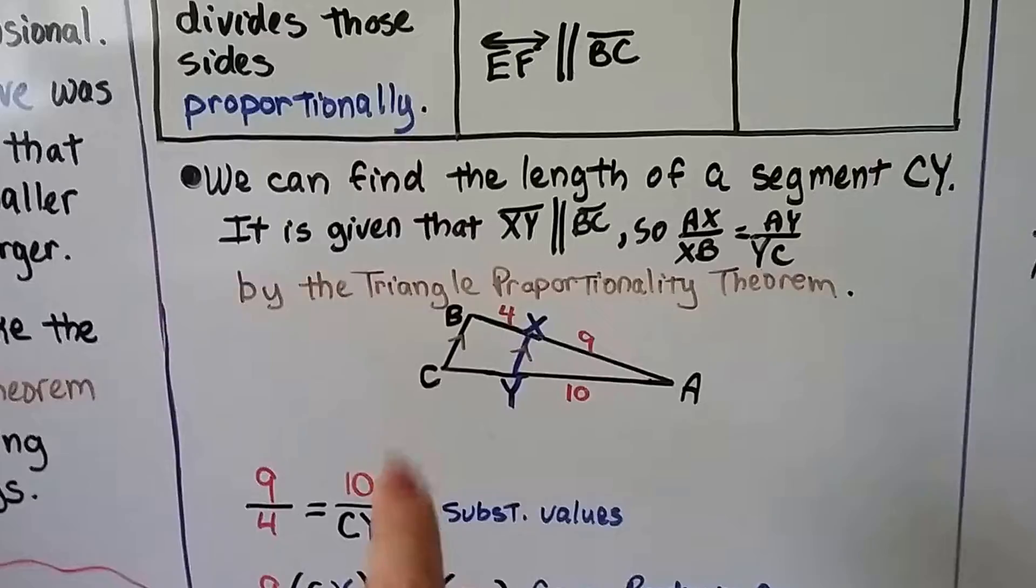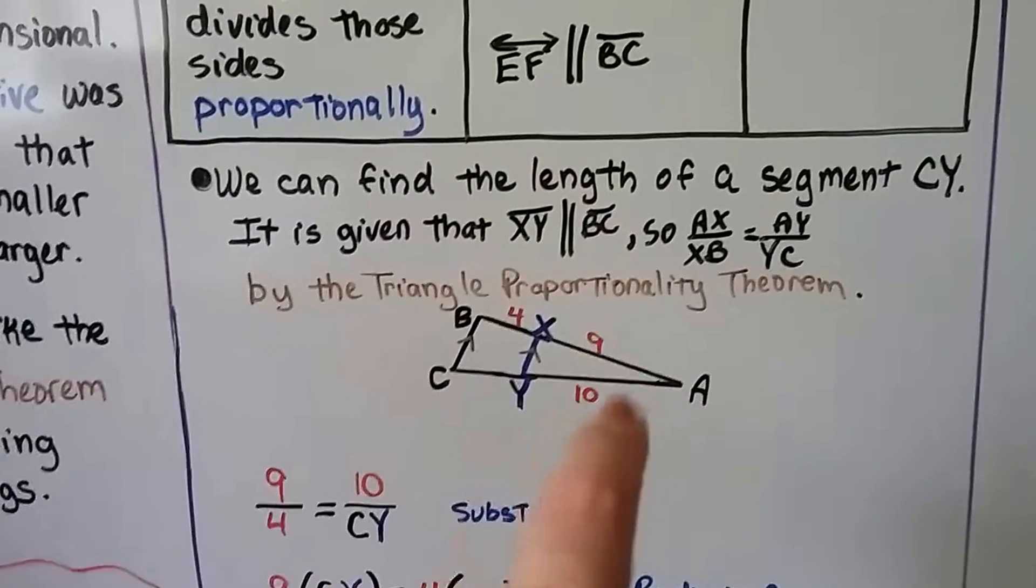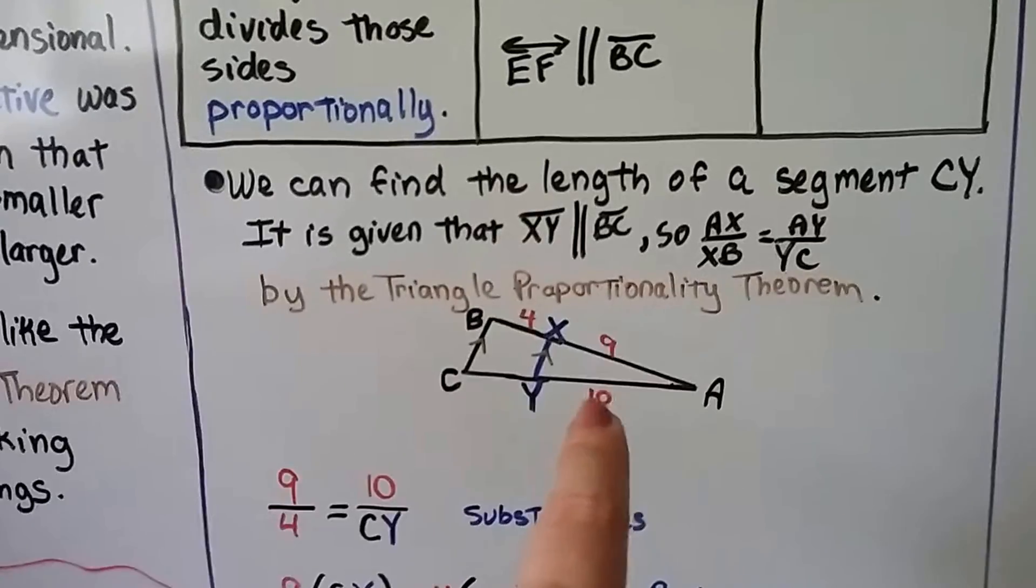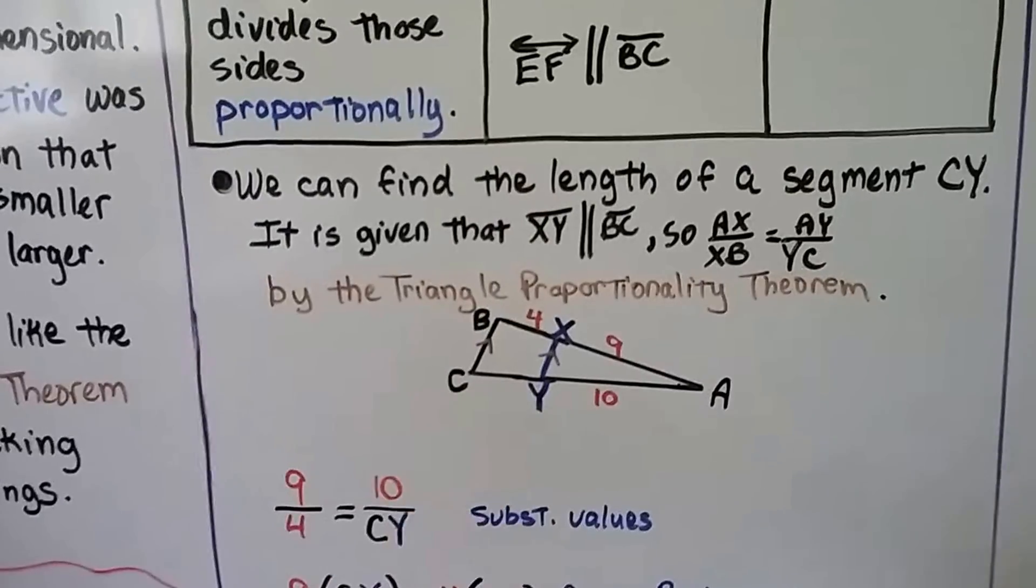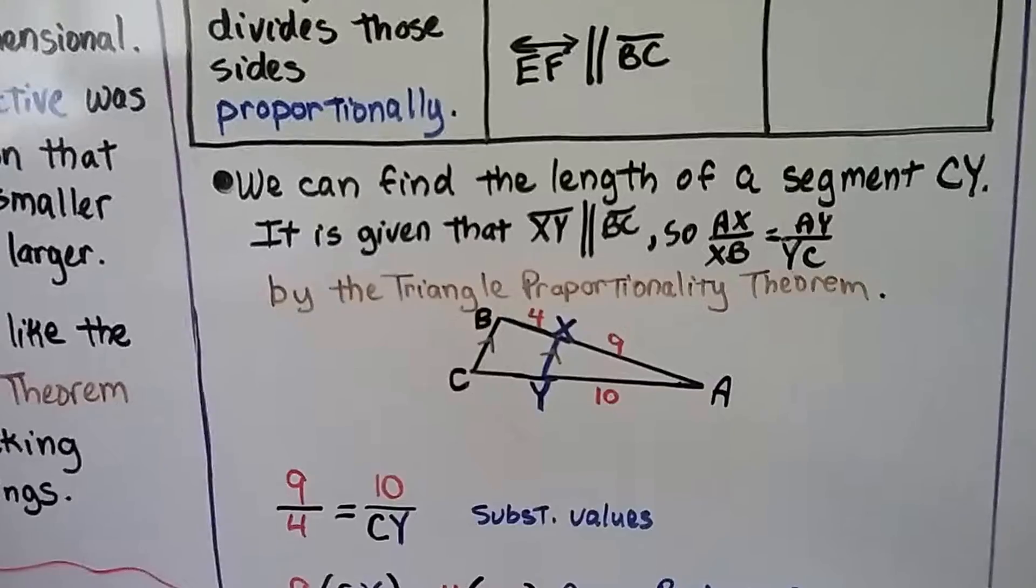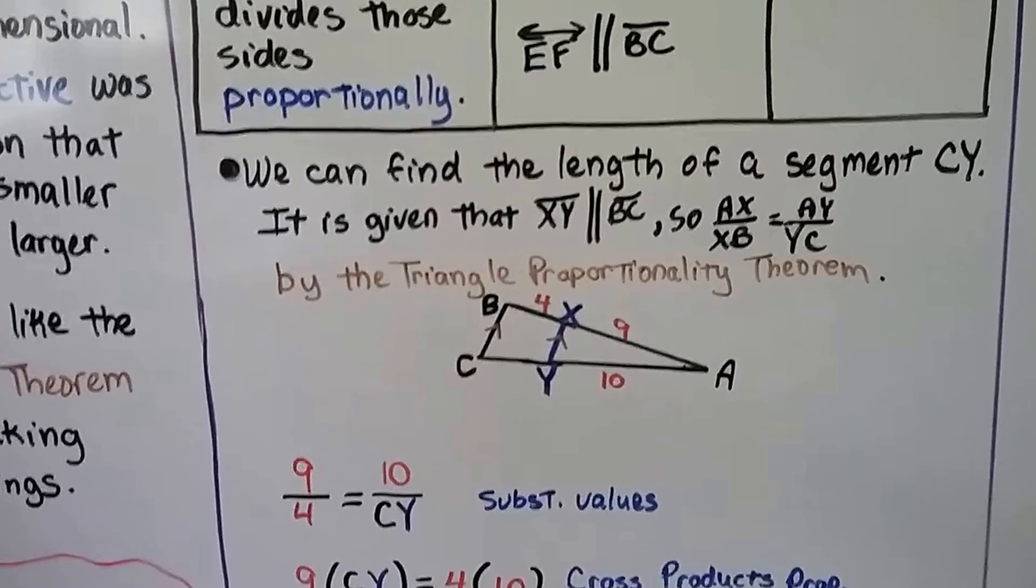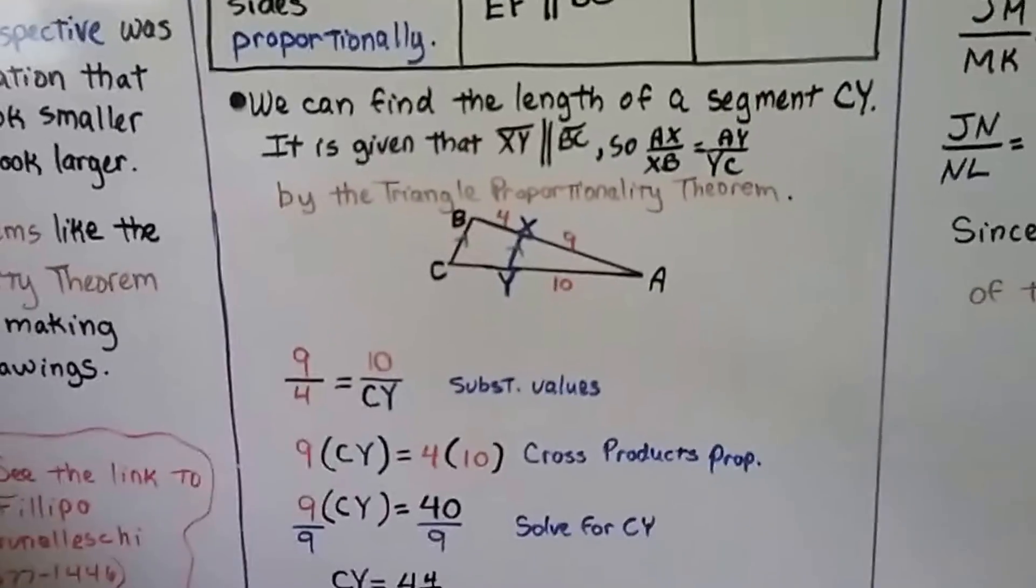And because of that, we can say AX, this nine, over XB, this four, is equal to AY, this ten, over YC, whatever that is. And we have to make sure if we're making that the numerator, then that's got to be the numerator so that they're corresponding.